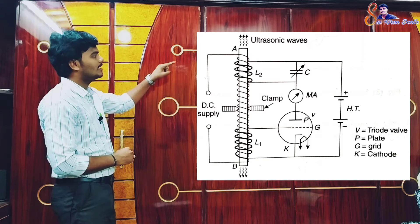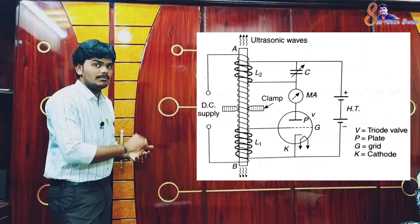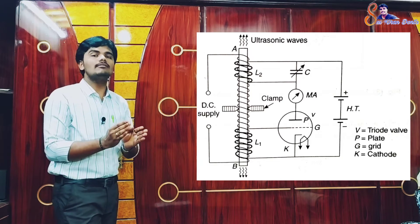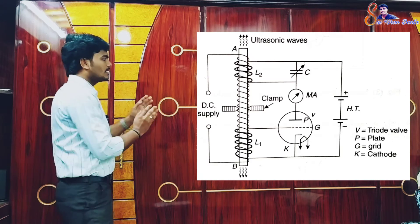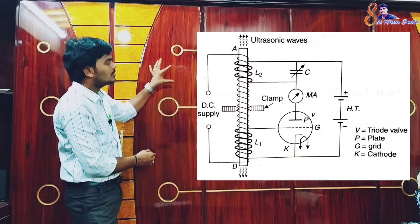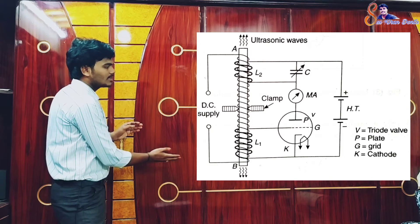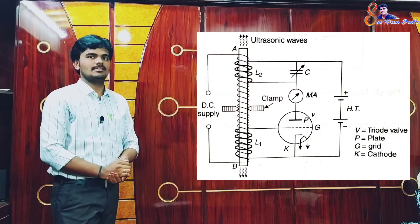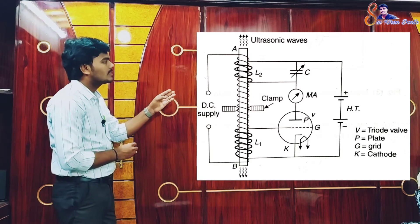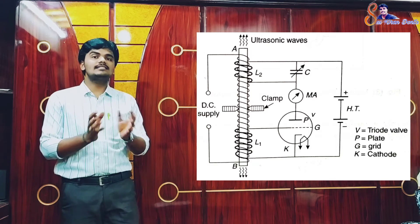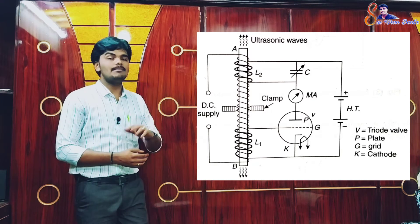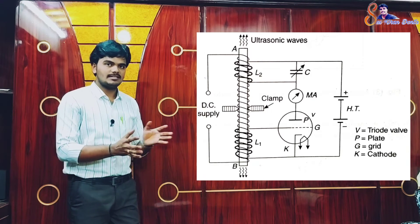The frequency of the oscillating plate circuit is adjusted with the help of a variable condenser C connected across the coil L2. A direct current milli-ammeter reads the plate current. When the frequency of the plate circuit is the same as the natural frequency of the rod, resonant vibrations are produced. The vibrations are maintained due to the coupling provided by coil L1. When the resonance oscillations start, the milli-ammeter records the maximum current.